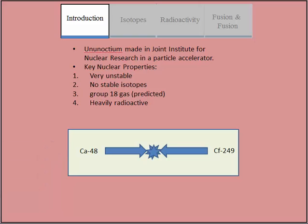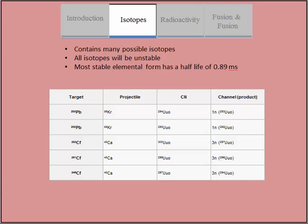Ununoctium has many possible isotopes, but none of them are stable due to the high radioactivity and atom mass of the molecule. The half-life is 0.89 milliseconds, meaning that ununoctium is very radioactive.